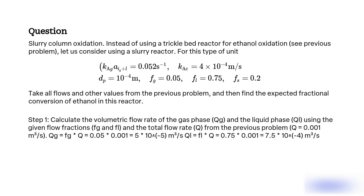Step 1: Calculate the volumetric flow rate of the gas phase QG and the liquid phase QL using the given flow fractions FG and FL and the total flow rate Q from the previous problem. Q = 0.1 m³/s. QG = FG × Q = 0.5 × 0.1 = 5 × 10⁻⁵ m³/s. QL = FL × Q = 0.75 × 0.1 = 7.5 × 10⁻⁴ m³/s.